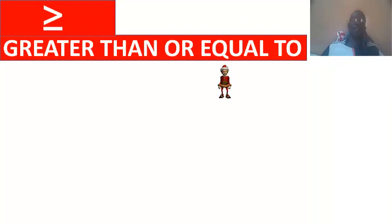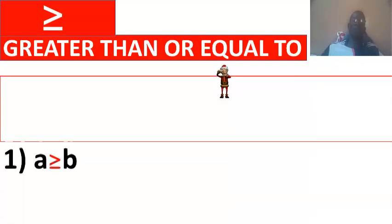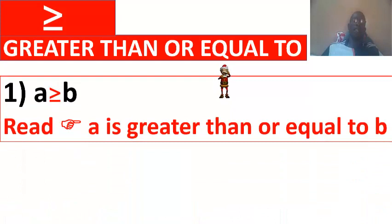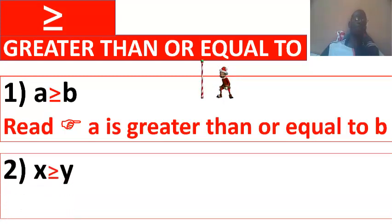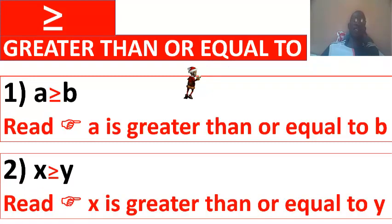The next one, superior or equal to, greater than or equal to. Example, A is greater than or equal to B, A is greater than or equal to B. Number two, X is superior to Y, X is greater than or equal to Y.